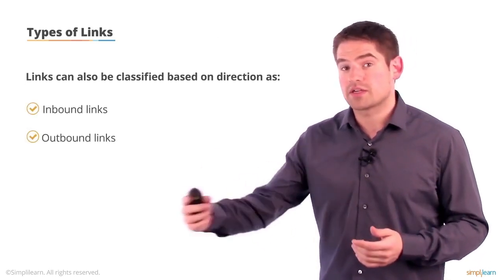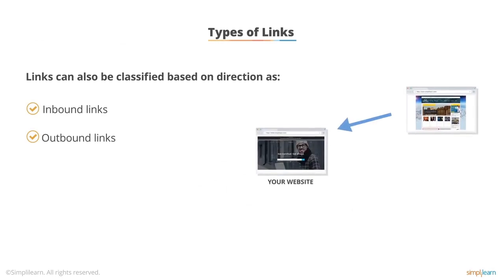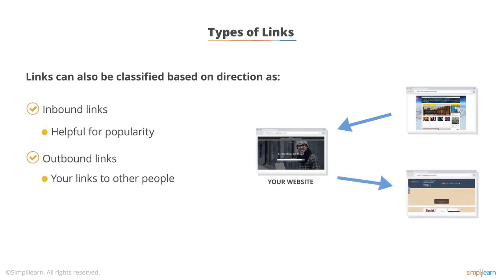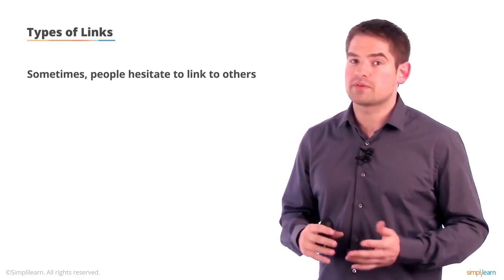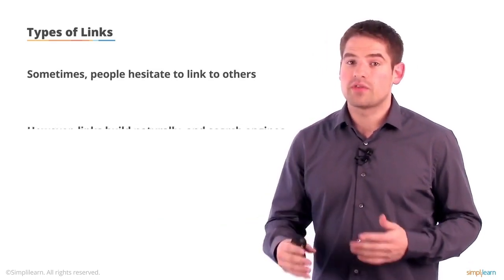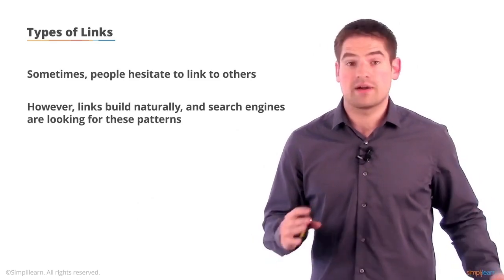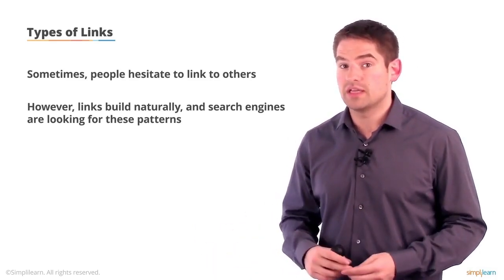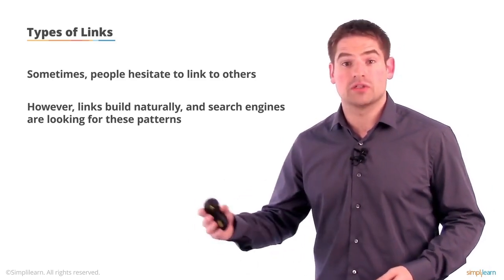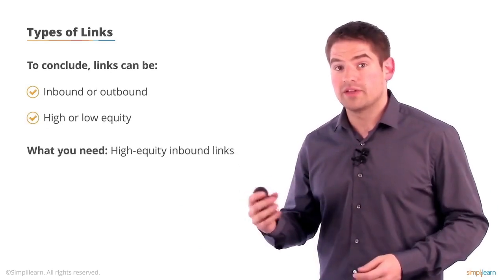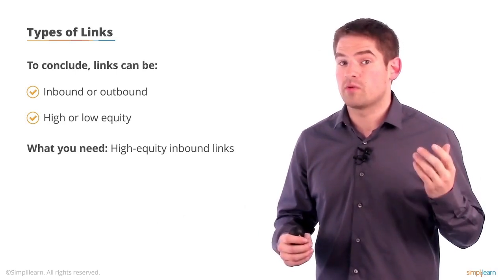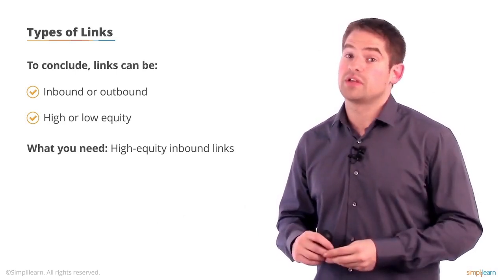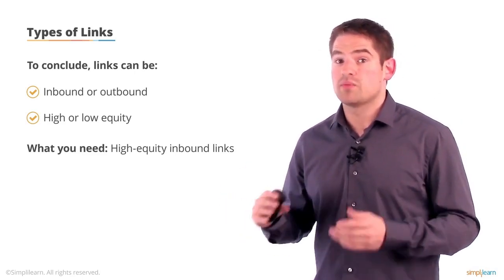There are also different kinds of links depending on direction. If a link is coming towards your website, that's called an inbound link — these are very helpful for the popularity metrics we've talked about. There are also outbound links, which are links you're sending to other people. A common misconception is that you'd never want to link out, but people writing blogs naturally link out, and it's these natural patterns that search engines are looking for. There's absolutely no problem linking out as long as it's to sources you actually trust.